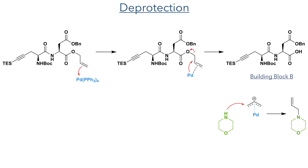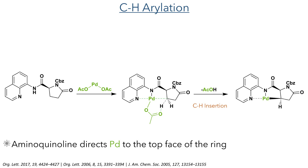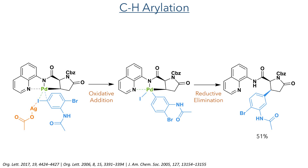With these building blocks now complete, they turned their attention to functionalizing a lactam that would serve as another part of the backbone and produce the required pendant group. This was done using C-H activation. The CBZ-protected lactam bears an aminoquinoline directing group that first coordinates to palladium acetate. This guides the palladium to the top face of the molecule, activating the C-H bond and allowing the hydrogen to be abstracted by the acetate ligand, forming a carbon-palladium bond. This species then underwent oxidative addition into an aromatic carbon-iodine bond, further promoted by silver acetate. A reductive elimination then followed, forming the carbon-carbon bond in a 51% yield on only the top face of the ring.